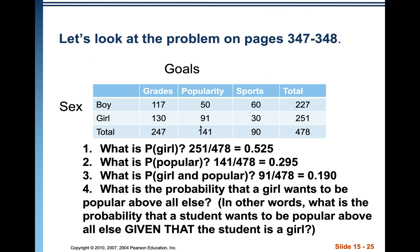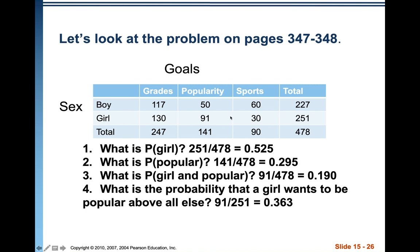This is a conditional probability — you are finding a probability not for the whole sample space, but only for members who meet the condition, in this case being a girl. We've restricted ourselves to the 251 girls, 91 of whom still have popularity as their main goal, giving 91/251 = 0.363.